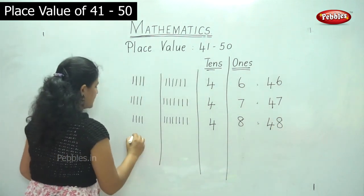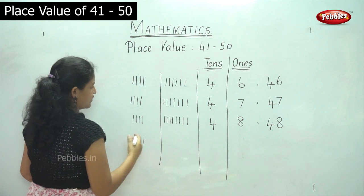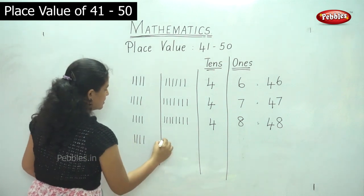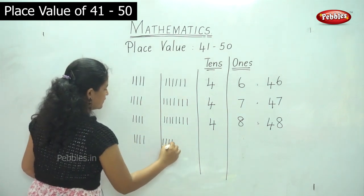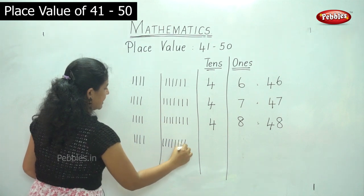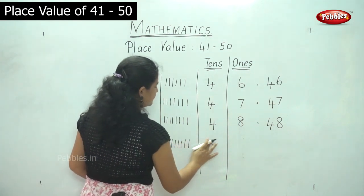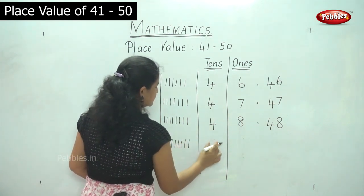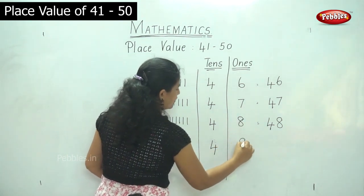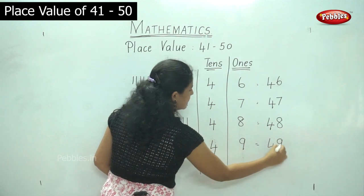Next I have 1, 2, 3, 4. In the tens place: 4. And in the ones house 1, 2, 3, 4, 5, 6, 7, 8, 9. So I have 4 tens and 9 ones. That gives me the number 49.